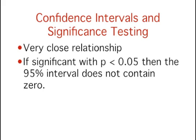There is a close relationship between confidence intervals and significance tests. Specifically, if a statistic is significantly different from 0 at the 0.05 level, then the 95% confidence interval will not contain 0. All values in the confidence interval are plausible values for the parameter being estimated, whereas values outside the interval are rejected as plausible values for the parameter.